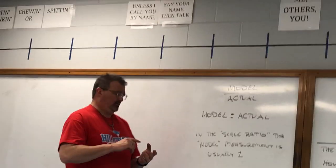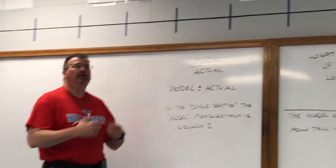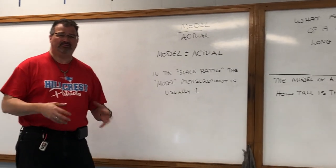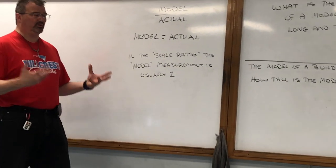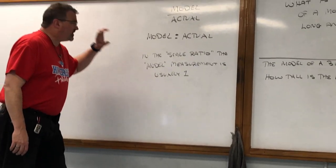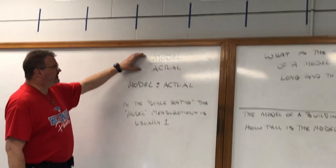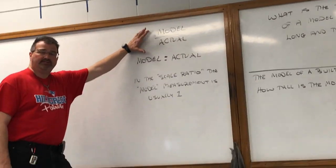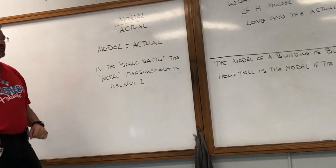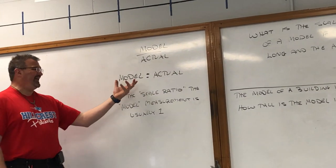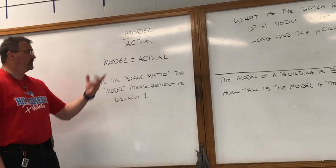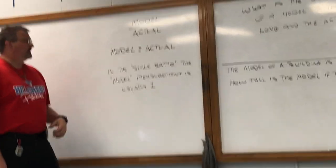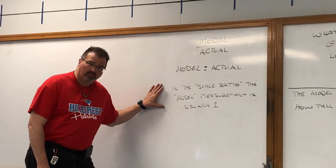It can be a three-dimensional model. Models can be larger than the actual size — we're used to them being smaller than actual size — but they can even be actual size if you're just trying to see how something looks. It's always written with the model measurement first. Now if you're going to do calculations, like we're going to do in a few minutes, you're going to want it written as a fraction, with the model measurement on top of the actual measurement. Most of the time, though, it's presented as what I call the digital clock ratio — model first, then a colon, then the actual measurement.